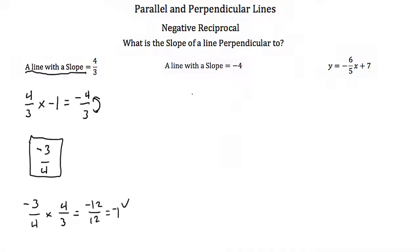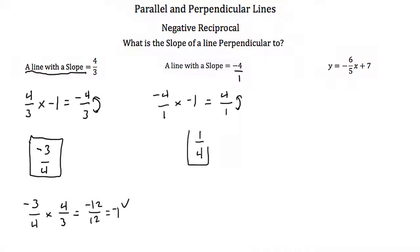Now we want the slope of a line perpendicular to a line with a slope of negative 4. Think of negative 4 as negative 4 over 1. Multiplying by negative 1 gives us 4 over 1, then taking the reciprocal gives us a slope of 1 fourth. We can double check: negative 4 over 1 times 1 fourth gives us negative 4 over 4, which is equal to negative 1. So the slope of a line perpendicular to a line with slope negative 4 is 1 fourth.